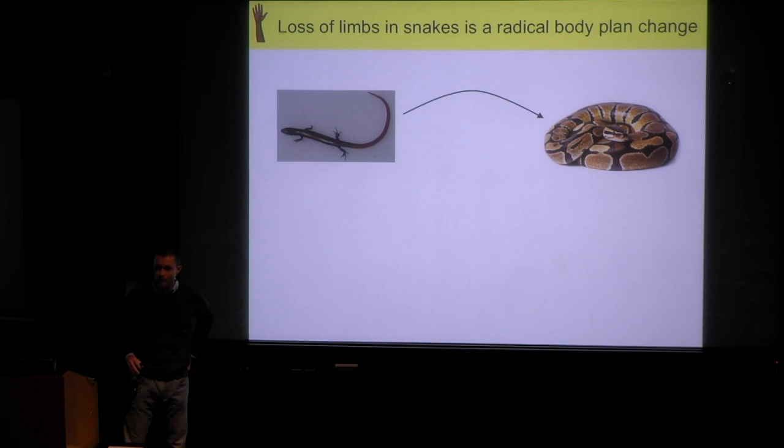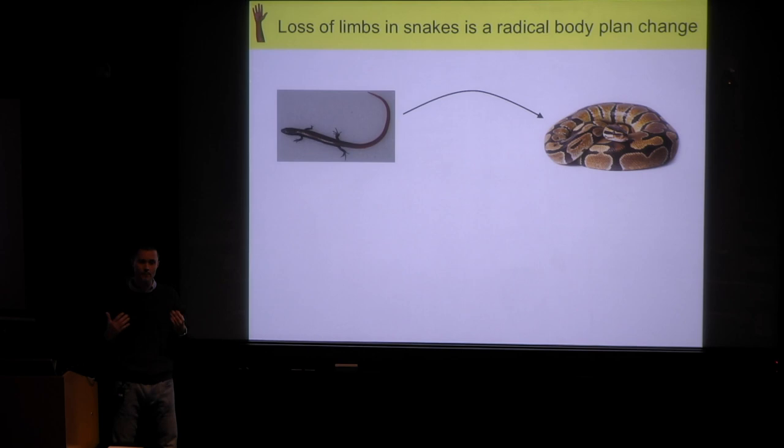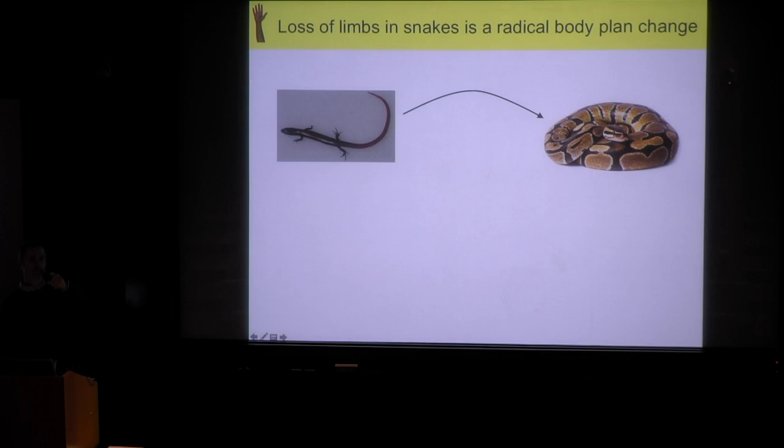A second trait I find incredibly fascinating — arguably one of the most radical body plan transformations among vertebrates — is the loss of limbs in the evolution of snakes.